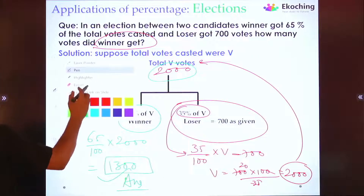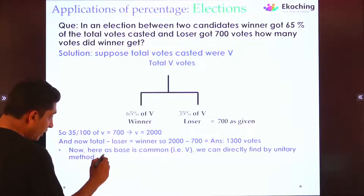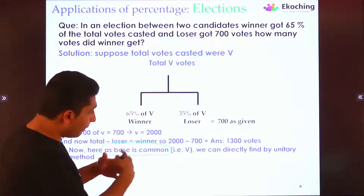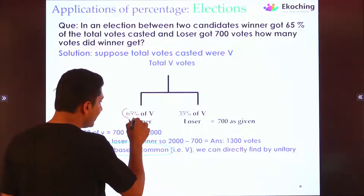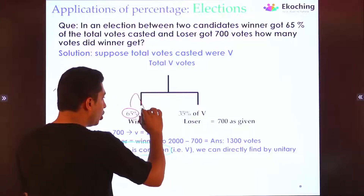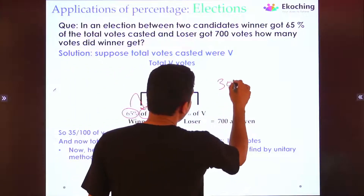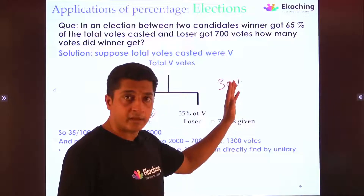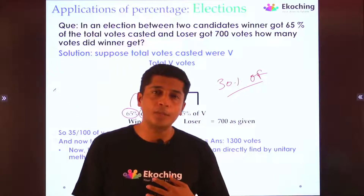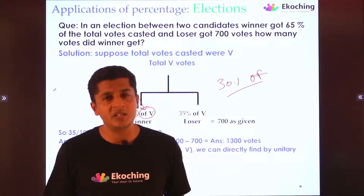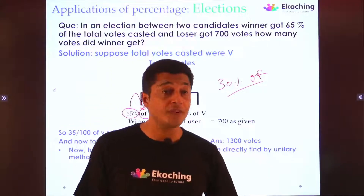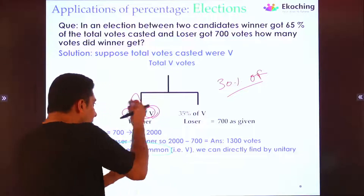Here the base is common. When we write percentage, it should always be followed by 'of.' Writing '30 percentage' has no meaning until you say '30 percentage of something.' That 'of' defines the base — what you're finding the percentage of. Here, both winner and loser percentages are of V, so the base is common. With a common base, you can directly apply the unitary method: if 35% is 700, then 65% is (65 × 700)/35 = 1300.